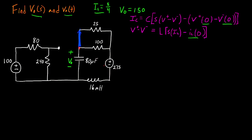Beginning the same way as before, let's start off with labeling our component currents. I can call this current I_L — it's important to make sure this I_L current is going in the same direction as the previous I_L we defined. I can label a current over here: I1, I2, and I_C for the capacitor current. With component currents labeled, we can move on to our node voltages. I'll call this my ground, this V1, this V2, and since I labeled this ground, V_o is referenced to ground and I can call this node V_o.